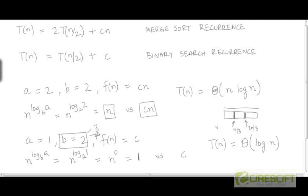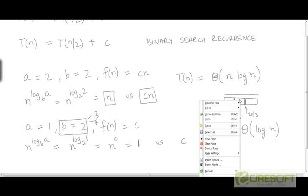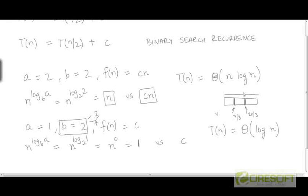Similarly, we could think of dividing the array into 4 parts instead of 2 or 3. But does it make any difference to the asymptotic complexity? Is dividing into 3 parts better than dividing into 2? Let's see what would happen if we had chosen a different value of b, keeping a the same but changing this base.